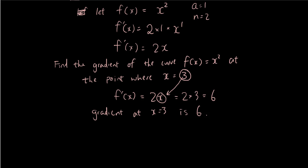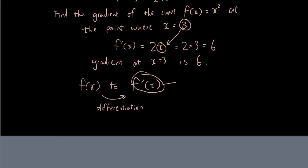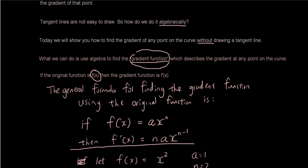So therefore we have just found the gradient of the curve without having to draw the tangent line. This process of going from f of x to f dash x is called differentiation. And f dash x is also named the derived function, or you can call it the derivative. So when someone says find the derivative of a function or differentiate a function, basically what they want you to do is find the gradient function, which is f dash x.